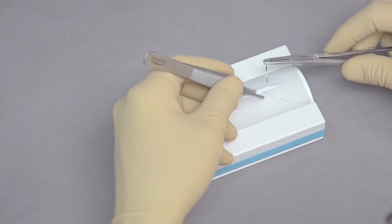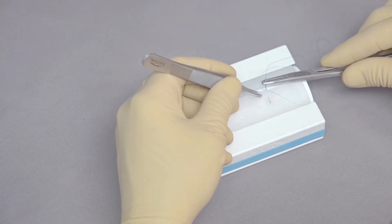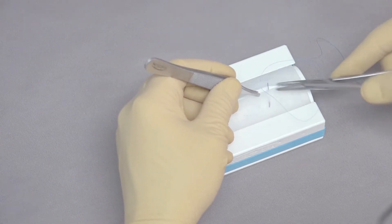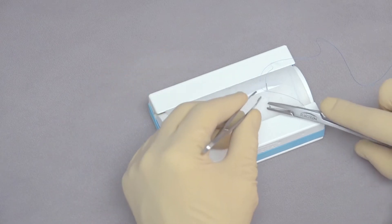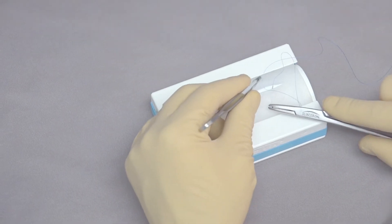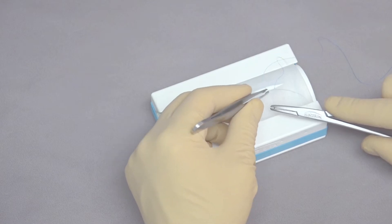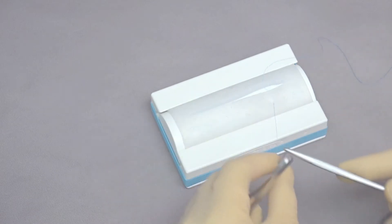The next bite is far, so we're going to go at least a centimeter away. Because we're using this translucent pad with markings, the first bite can be halfway between the marking and the incision, and the far bite will go from the incision all the way to the marking.